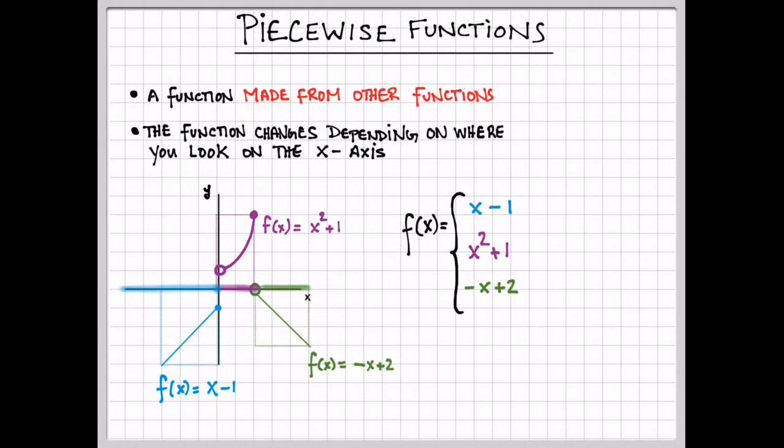Starting with the blue function, f of x equals x minus one. This happens everywhere on the left side of the graph. So x here is allowed to be less than or equal to zero.